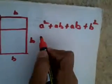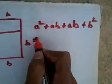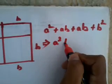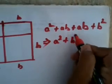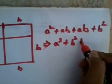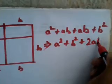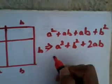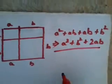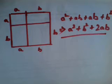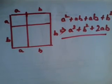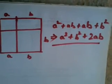Then we can conclude that a square plus b square plus 2ab — hence proved. This is a new way of proving this formula.